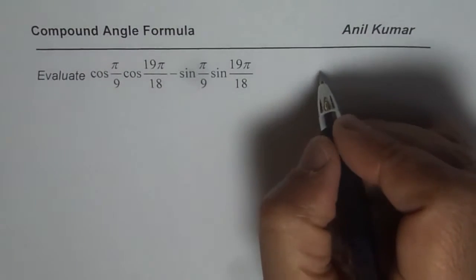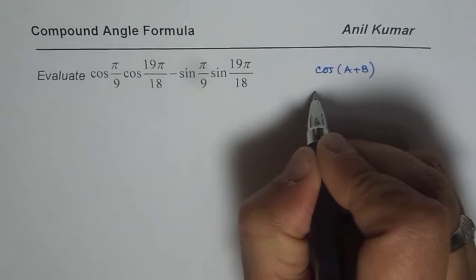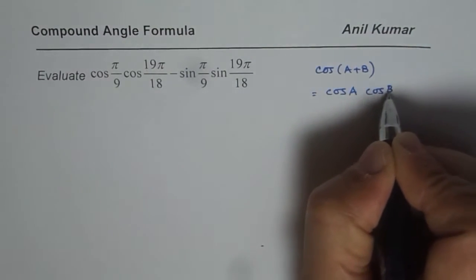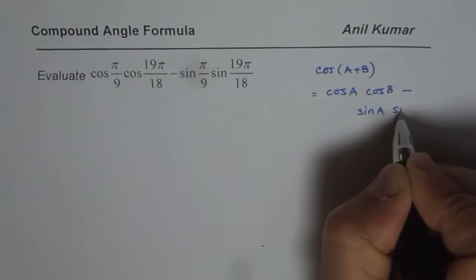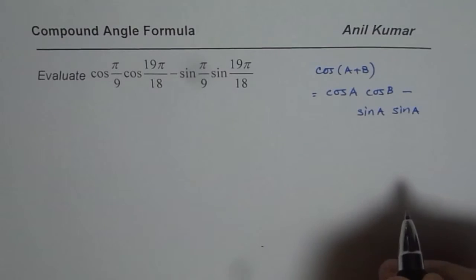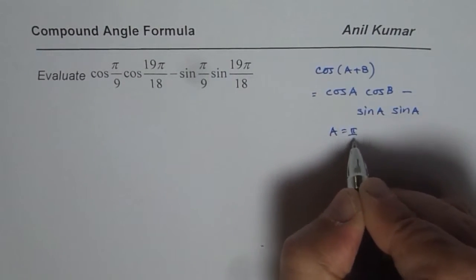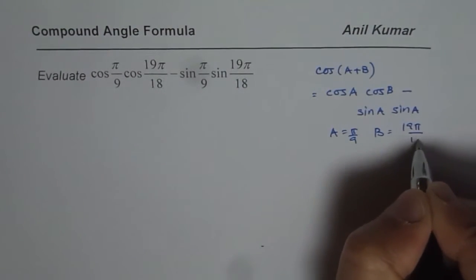Now you remember the formula cos(A+B). It is equal to cos A cos B minus sin A sin B. So we can directly apply this formula over here and we know what is A. A is π/9 and B is 19π/18.